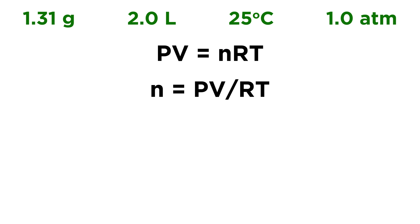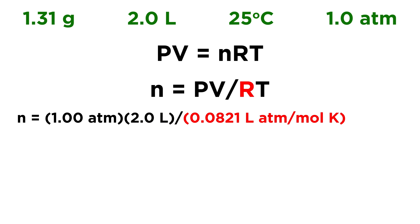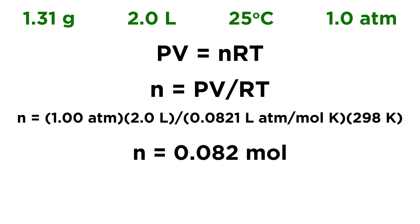So, now let's just plug in what we know. N, or the number of moles in this sample of gas, are going to be equal to 1.00 atmospheres times 2.0 liters, that's the volume of the sample, divided by the gas constant R, which in this case we're going to use the version that is 0.0821 liters atmospheres per mole Kelvin, because we're going to want to cancel out those other units. The temperature is 25 degrees Celsius, but we always want to express that in Kelvin, so that is 298 Kelvin. If we plug all that into the calculator, we get 0.082 moles.